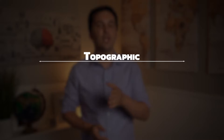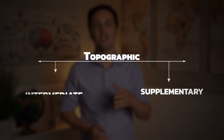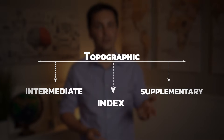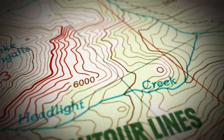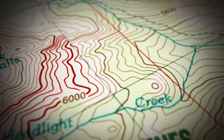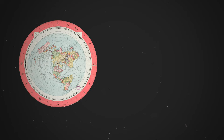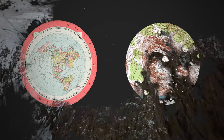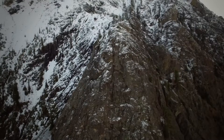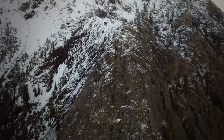Generally speaking, topographic maps utilize three main contour patterns to depict different changes in elevation. Concentric circles are used to represent hills or peaks, with the center or innermost circles representing the areas with the highest elevations.